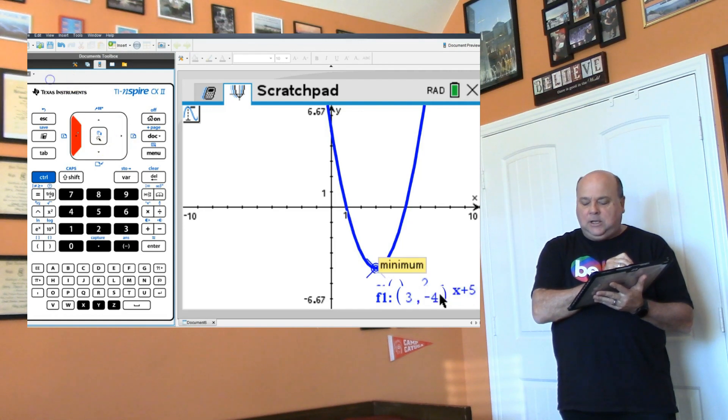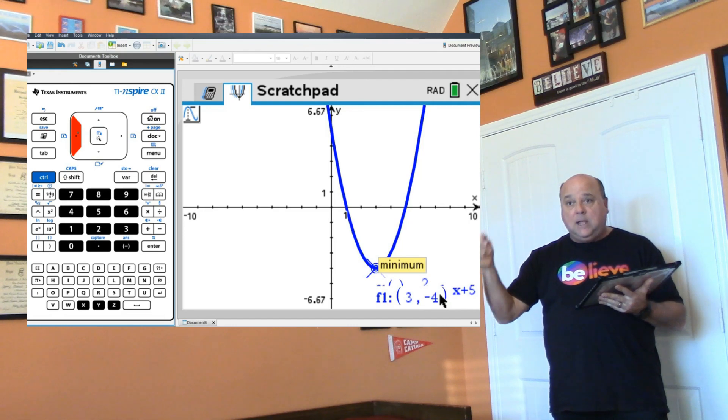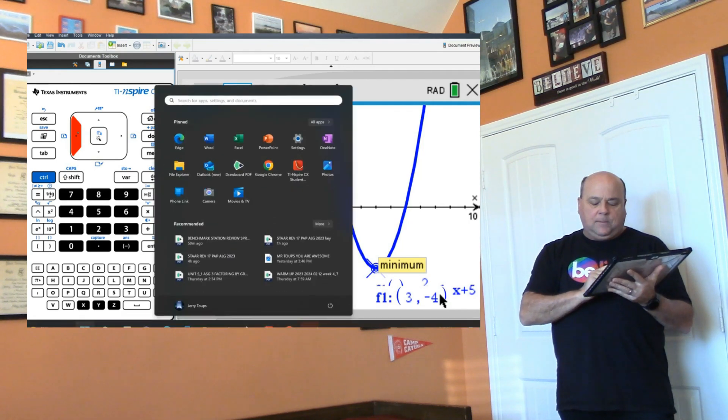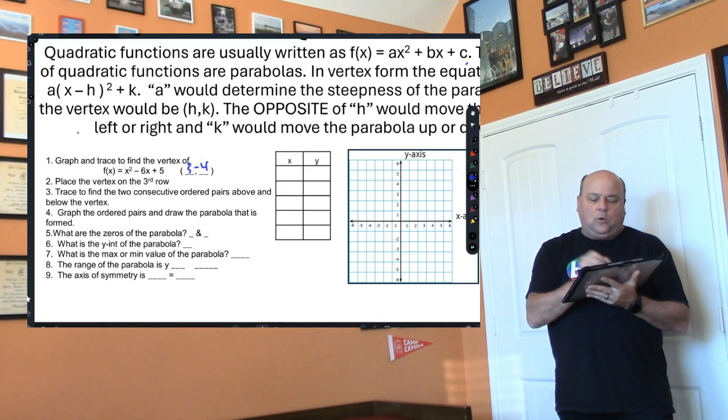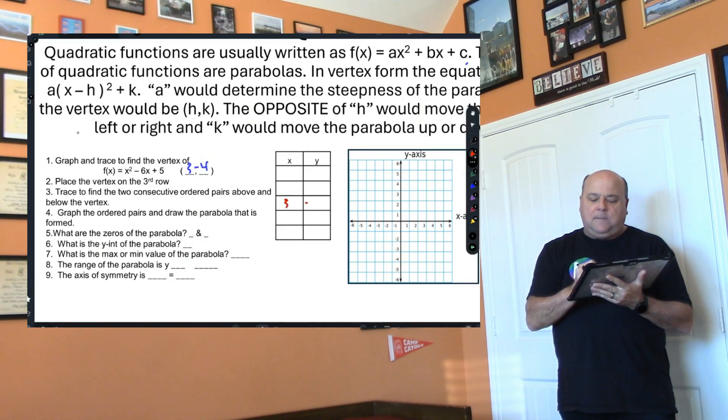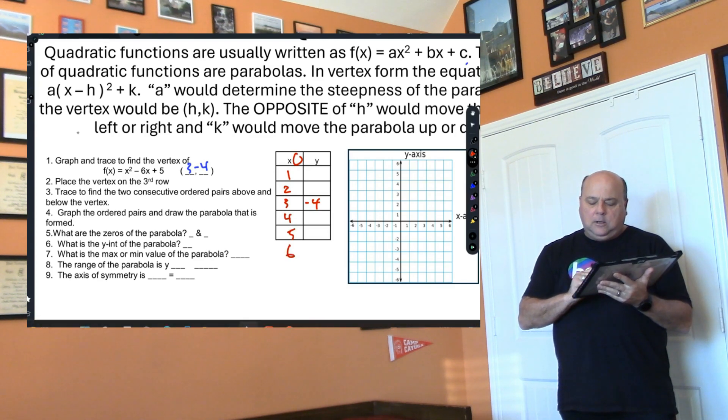The bottom is right here at (3, -4). Notice it says minimum—that's my vertex. I'm going to put (3, -4) right here in the middle of my table. Then I'm going to put 2, 1, 4, 5, and I'm going to put a zero up here because that's my y-intercept. Now go to your calculator.